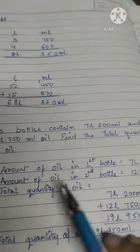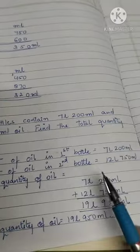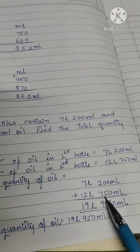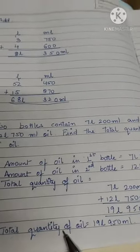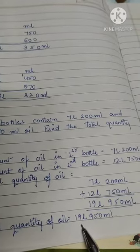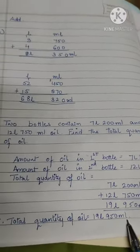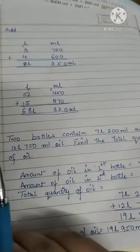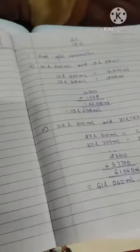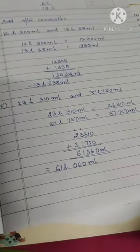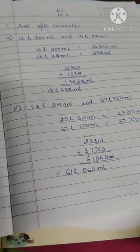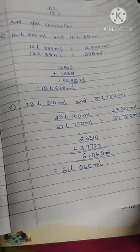Total quantity of oil - you will add both together. So the total quantity of the oil you will get is 19 liters 950 ml. This is the question that you have to do in your classwork copy.